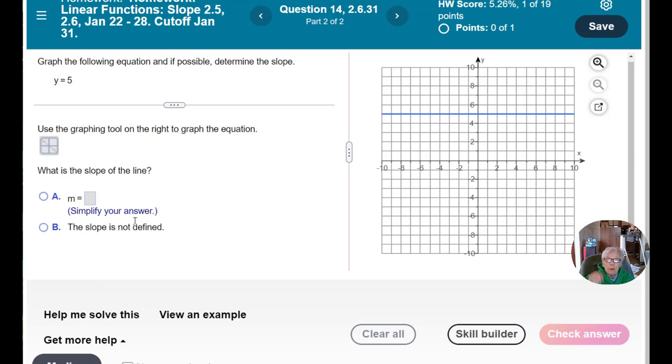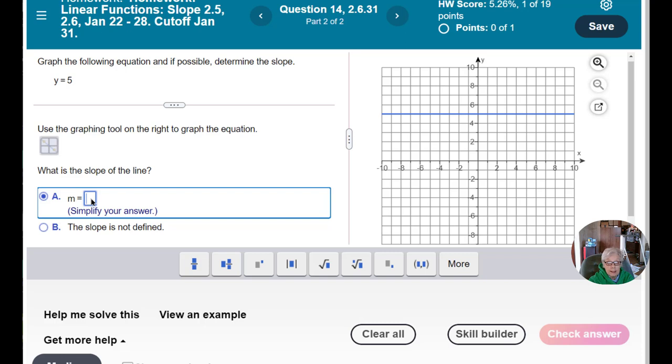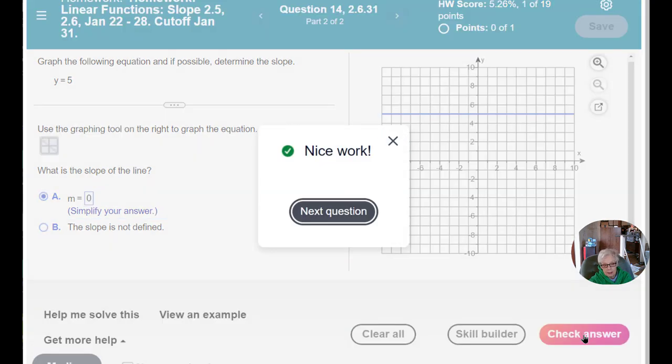Now, what is the slope of a horizontal line? Zero. So I click on A, not B. It is defined. The number zero is a number. So I click on zero and then I check answer. Nice work.